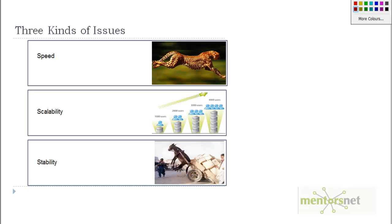There are three kinds of issues. The first is speed issues — how fast is my system? Speed-related issues can be broken down into user satisfaction, and how response time trends over time. For example, we may have a good response time with one user, but does that hold when there are 2,000 users?